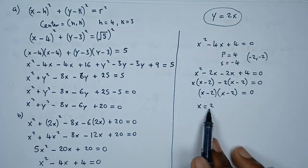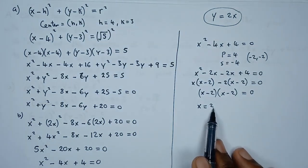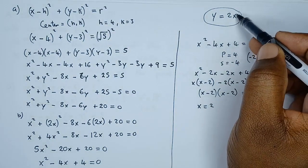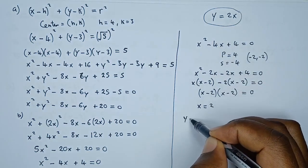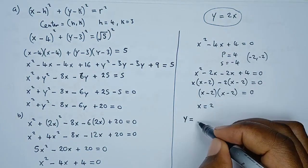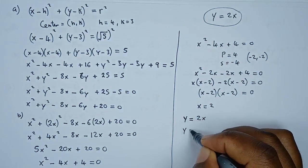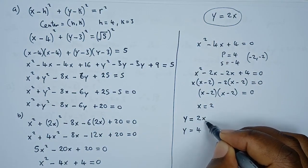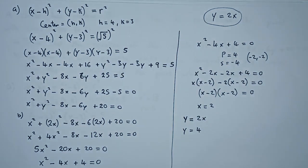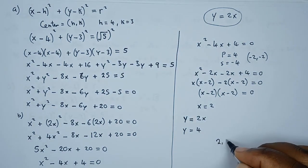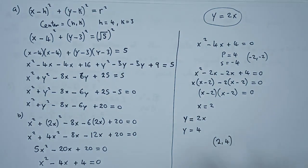Now substituting x equals 2 into the tangent equation y equals 2x gives y equals 2 times 2, so y equals 4. Therefore the tangent meets the circle at the point (2, 4). That is the coordinate we're looking for.